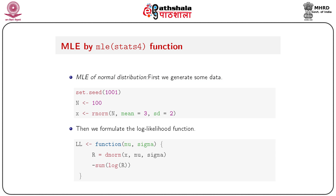In this second module we will see how to use the `mle` function from the stats4 package to get maximum likelihood estimations. We start with a normal distribution. First, generate a normal variable with seed 100001, sample size n = 100, and x = rnorm(n, mean = 3, sd = 2).